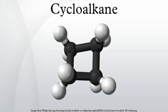Cycloalkanes are classified into small, common, medium, and large cycloalkanes. Cyclopropane and cyclobutane are the small ones; cyclopentane, cyclohexane, and cycloheptane are the common ones; cyclooctane through cyclotridecane are the medium ones; and the rest are the larger ones.